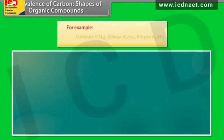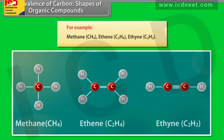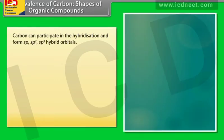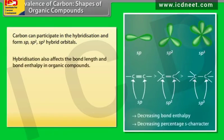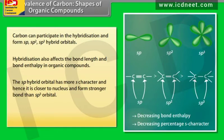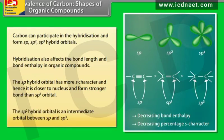For example, methane, ethane, ethyne. Carbon can participate in hybridization and form sp, sp2, and sp3 hybrid orbitals. Hybridization also affects bond length and bond enthalpy in organic compounds. The sp hybrid orbital has more s character and hence is closer to the nucleus and forms a stronger bond than the sp3 orbital. The sp2 hybrid orbital is an intermediate orbital between sp and sp3.